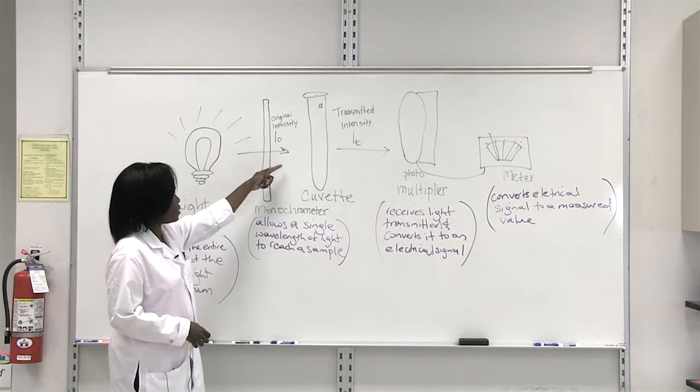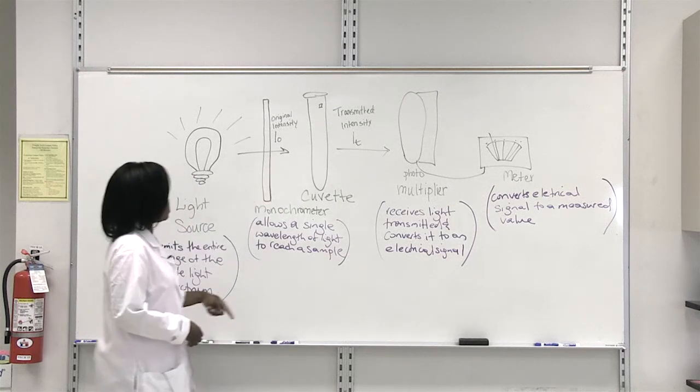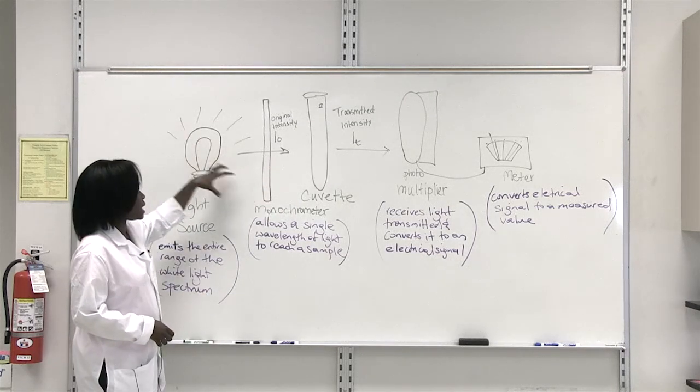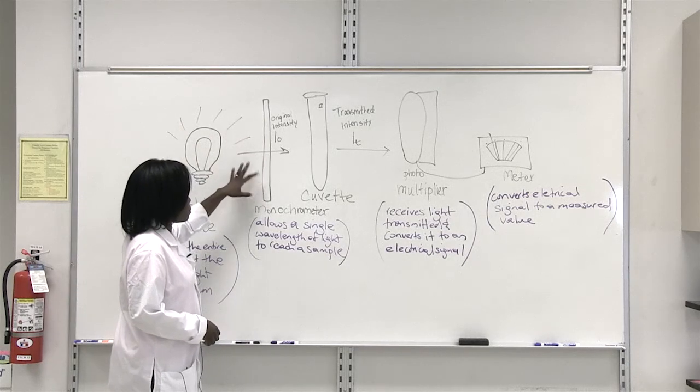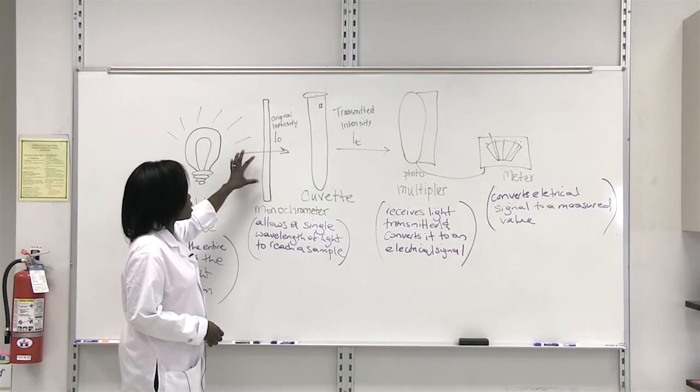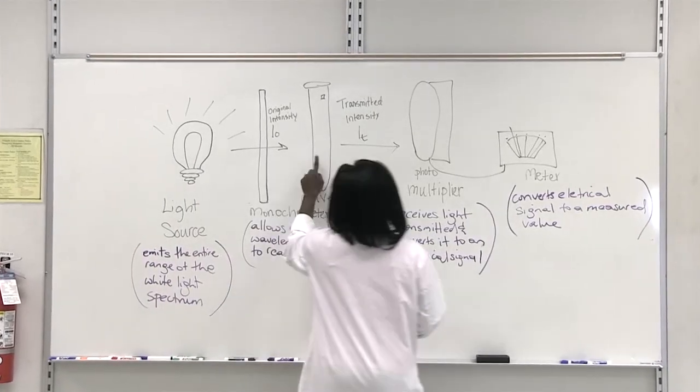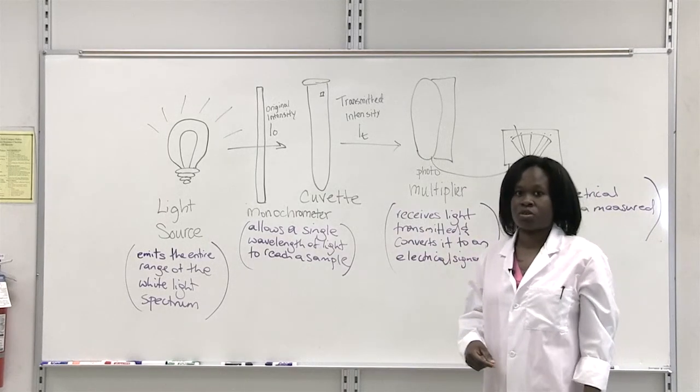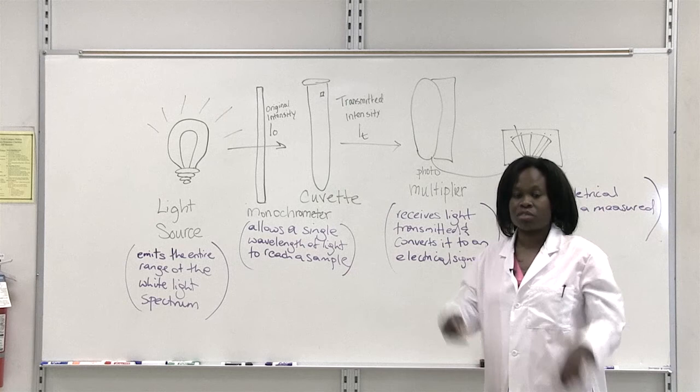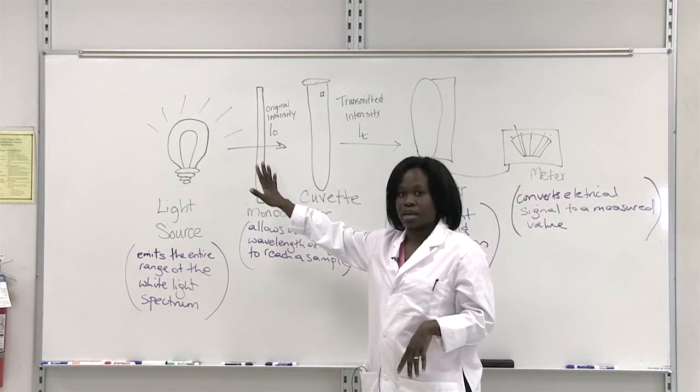So one wavelength of light passes through to hit your sample of interest. So this emits light at many different wavelengths. This monochromometer will allow just light at one wavelength to pass to hit your sample here. So if you want to determine the absorbance of your sample at one wavelength, the spectrophotometer allows you to do that.